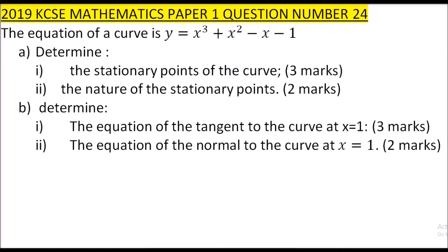This is 2019 KCSE number 24. We are told the equation of a curve is y equals x cubed plus x squared minus x minus 1. Part A: determine the stationary points of the curve.